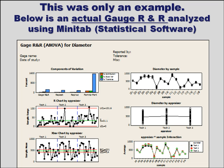The results of an actual Gauge R&R will provide valuable direction for variation reduction. The helicopter example was not an actual Gauge R&R, but rather a way to show that total variation can be put into two categories: process and measurement system. This slide shows an actual output from a Gauge R&R. Statistical software such as Minitab, combined with additional training, will enable you to perform your own Gauge R&Rs and save time and money by reducing variation.